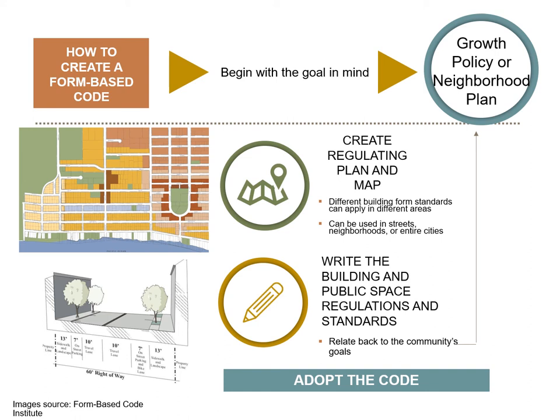Once the vision is clarified, develop the regulating plan — basically a fine-grained zoning map and street plan tied to standards. Form-based codes are highly graphic, with lots of diagrams and images to clarify standards. Once a form-based code has been drafted, discussed, and thoroughly vetted with various interested constituencies, it is adopted into law by the city council following zoning procedures in Montana statute. It then becomes part of the overall municipal code, usually as a zoning amendment, but it may also amend other sections of the code such as street specifications and subdivision regulations.